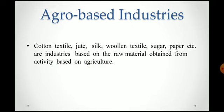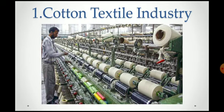Agro-based industry means the industry which obtains raw material from agriculture. So cotton textile industry, jute, silk, woolen textile, sugar and paper — all of these are agro-based industries. Why? Because to manufacture production in these industries, the raw material is obtained from agriculture. First, we will learn about agro-based industries.